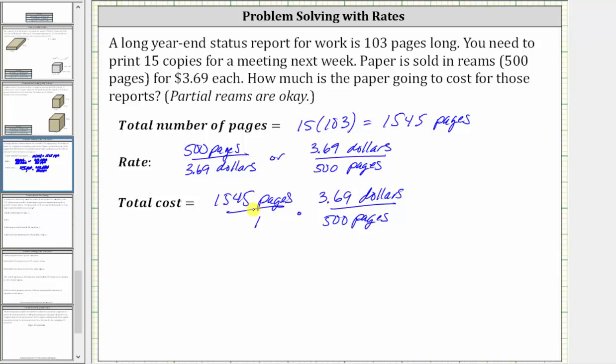Now looking at the product, notice how we have pages divided by pages, so the units of pages simplify out, leaving us with dollars. In the numerator we have 1,545 times 3.69. In the denominator we have 500, and the units are now dollars.